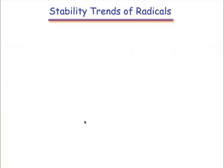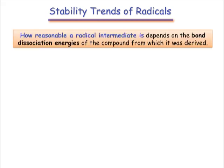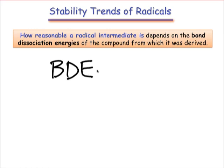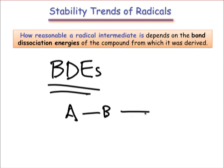Until this point, we've talked only about carbon-centered radicals. You may be wondering about trends in radical stability as a function of atom type. When considering radicals centered on different atoms, it becomes critical to examine the origin of each radical — in other words, we have to look at the stability of the bonds that broke to form the radicals. Bond dissociation energies, or BDEs, provide a direct measure of the likelihood that a two-electron bond will break to form two radicals, a process known as homolytic cleavage.